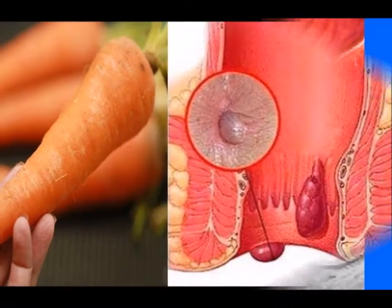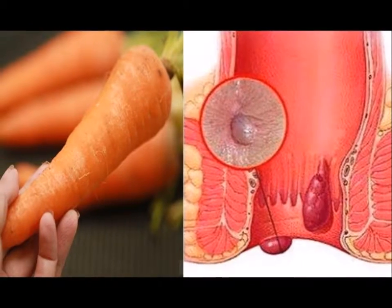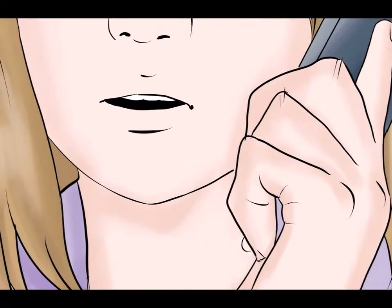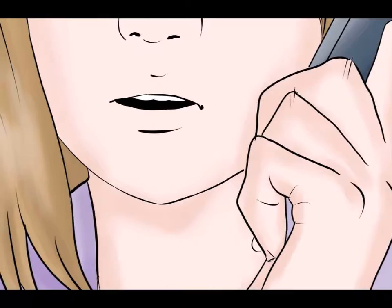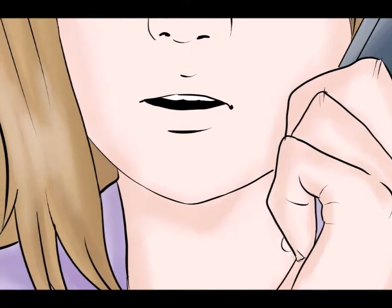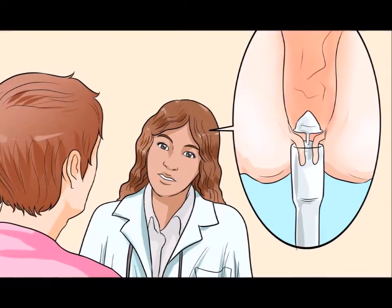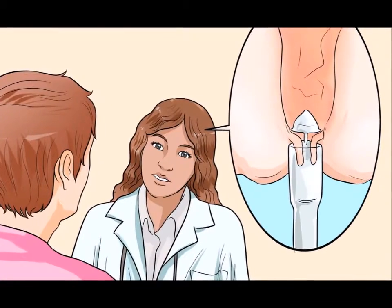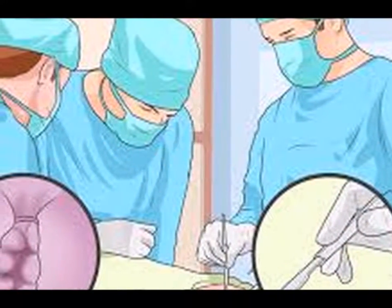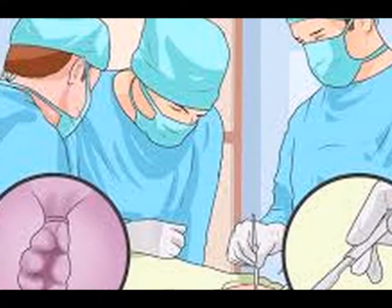Any form of straining, as in constipation or diarrhea, increases the pressure on the anal veins. Besides inflammation, itching, pain, bleeding, and leaking of fecal matter can accompany the swelling. At the very extreme, hemorrhoids may require surgery. There are, however, things you can do at home on how to shrink hemorrhoids fast.